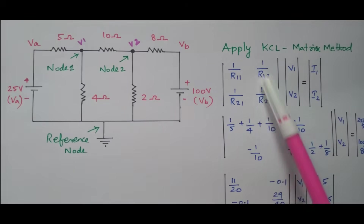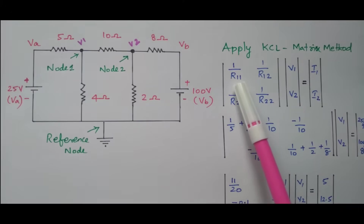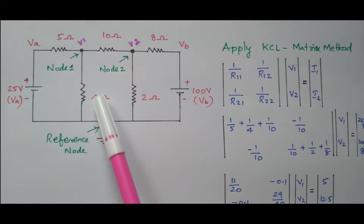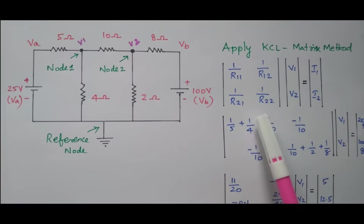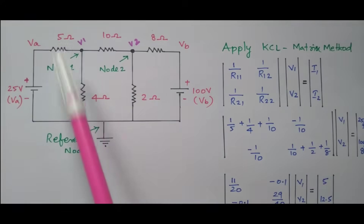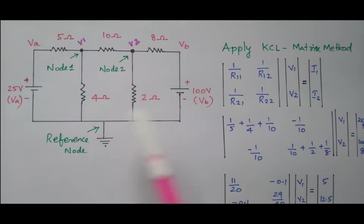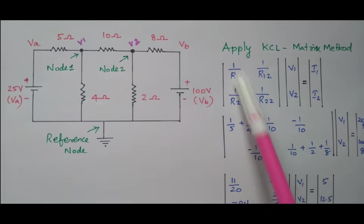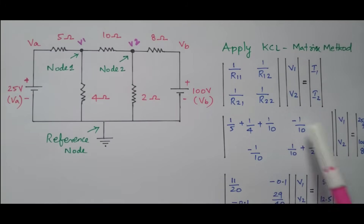How do we find the resistance matrix? R11 is the sum of all resistors connected at node 1: the 5 ohm, 4 ohm, and 10 ohm. So 1/R11 equals 1/5 plus 1/4 plus 1/10. R12 is the resistor connected between node 1 and node 2, which is the 10 ohm. Since it is off-diagonal, it is negative: minus 1/10.